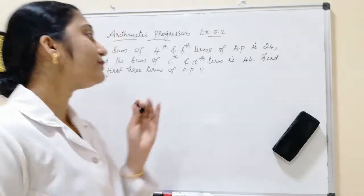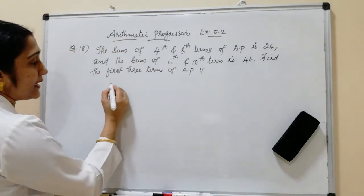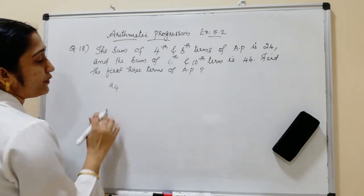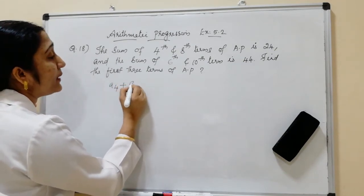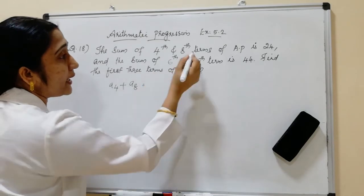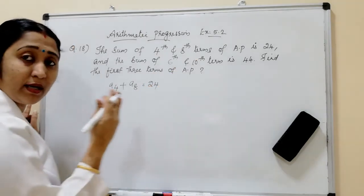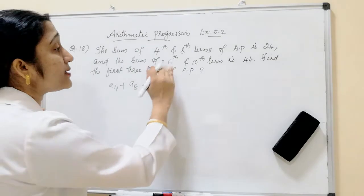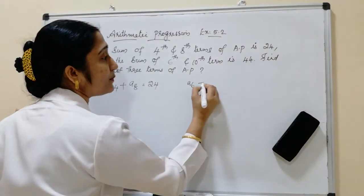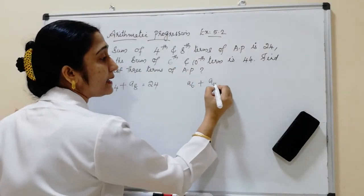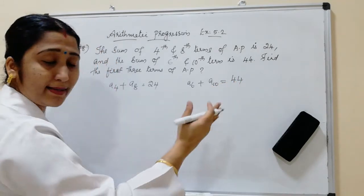The sum of the 4th and 8th terms means A4 plus A8 is equal to 24. This is the first condition given in the question. The next condition is A6 plus A10 is equal to 44. These are the two conditions given.